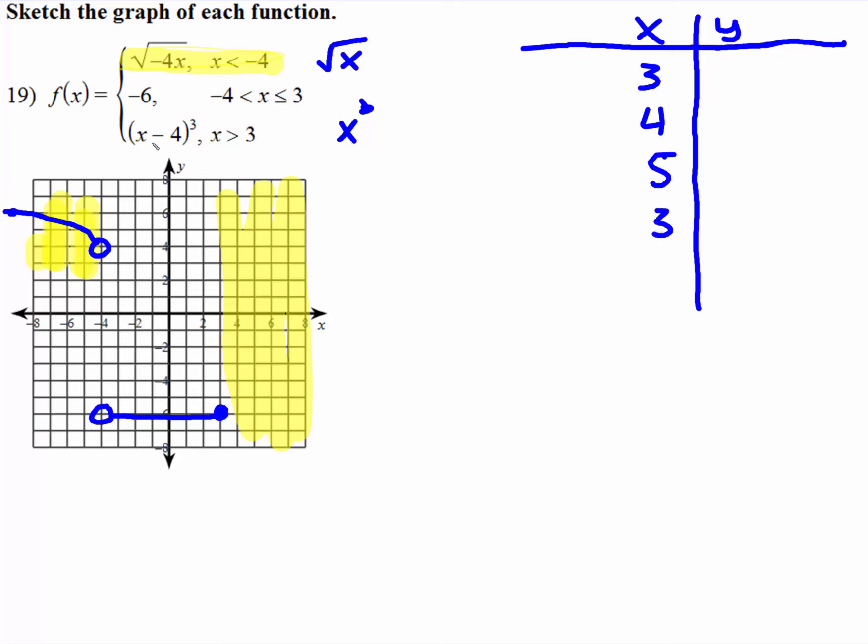So when you put 3 in here, 3 subtract 4 is negative 1. Negative 1 cubed is still negative 1. So at 3, down to negative 1, we're going to put a hollow dot. We're going to put a 4 in here. 4 subtract 4 is 0. 0 cubed is 0. 5 subtract 4 is 1. 1 cubed is 1. 6 subtract 4 is 2. 2 cubed is 8.